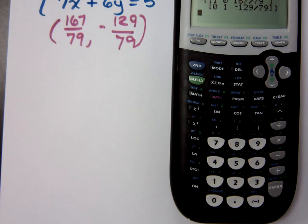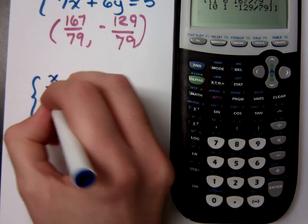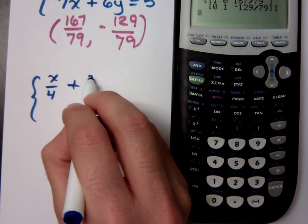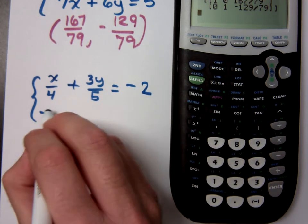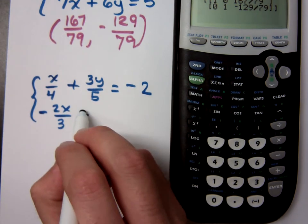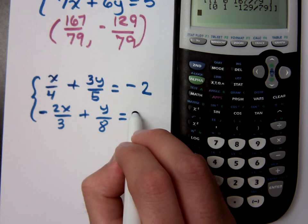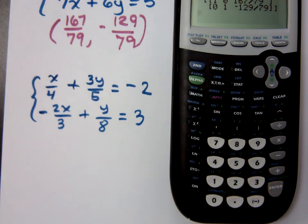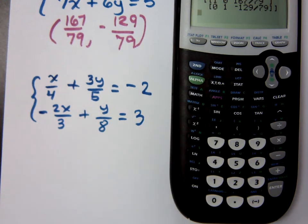Now, we can go crazy with some of these problems, and I could ask you to do this. If I ask you to find the solution for x over 4 plus 3y over 5 is equal to negative 2, and then negative 2x over 3 plus y over 8 is equal to 3. I could give that to you on a test, and I could expect you to solve this by hand. Is it going to be pretty? No, because there's some clearing of fractions that would need to be done in both of these guys. But since I'm showing you an easier way to do this, what are you going to do?